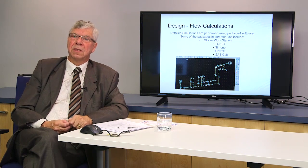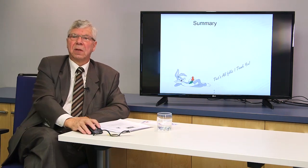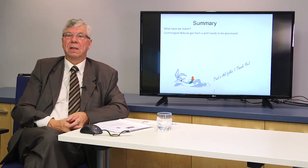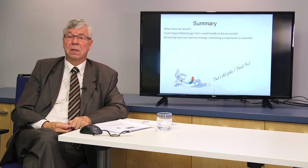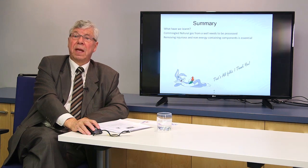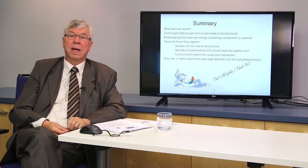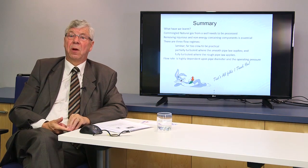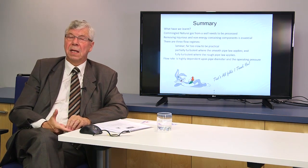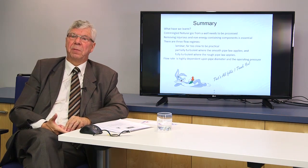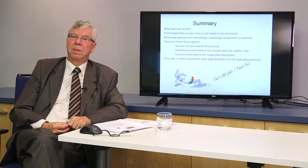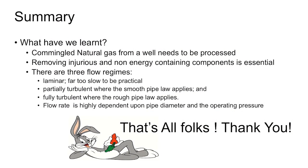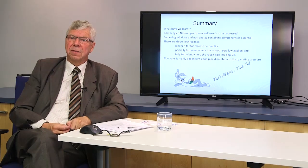Software tools such as Stoner Workstation, TGNET, and SynerGEE are used to perform these calculations. In summary: commingled gas from the wellhead must be processed to remove injurious products (water, sulfur) and non-energy-containing components. There are three flow regimes — laminar (impractical), partially turbulent (smooth pipe law, common in new fields ramping up), and fully turbulent (most common in operating pipelines) — with flow rate highly dependent on pipe diameter and operating pressure.